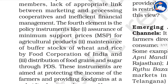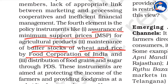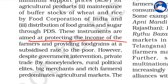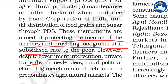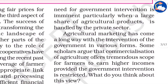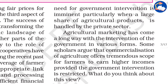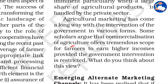The fourth element is policy instruments like assurance of Minimum Support Prices for agricultural products, maintenance of buffer stocks of wheat and rice by the Food Corporation of India, and distribution of food grains and sugar through the Public Distribution System. These instruments aim to protect the income of farmers and provide food grains at a subsidized rate to the poor. However, despite government intervention, private trade by money lenders, rural political allies, big merchants, and big farmers still predominates the agriculture market.